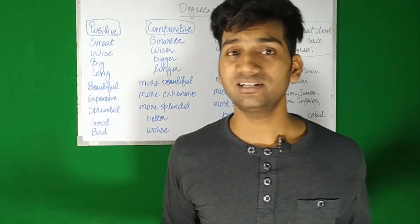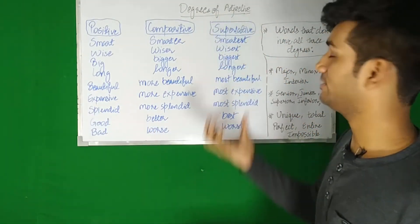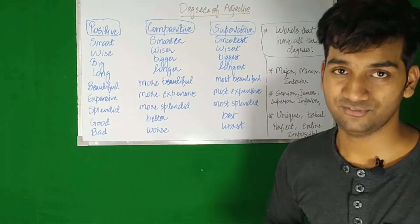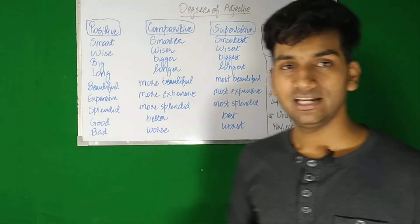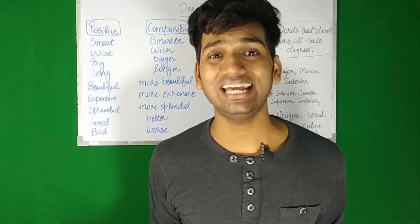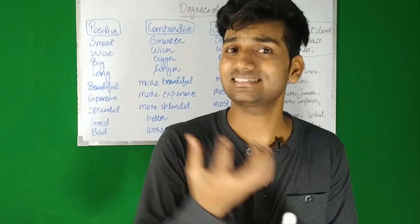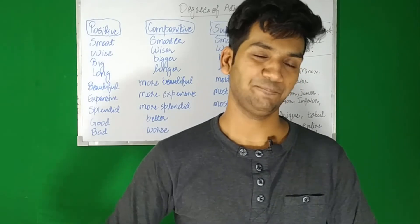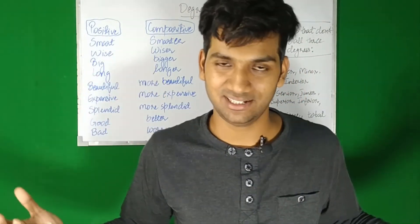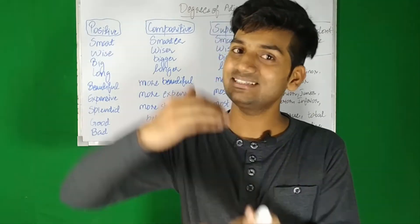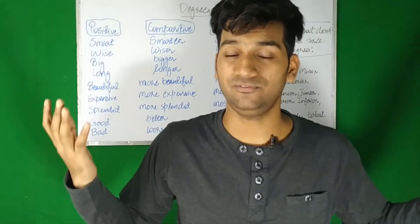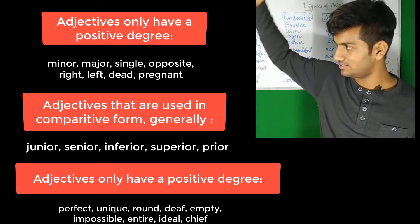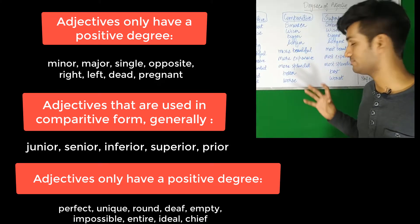There are some words that are used only as a superlative degree - they do not have a positive or comparative form. Some of them are: perfect, unique, total, entire, impossible. If something is unique, can it get any more unique? It already is unique - nothing else is like it. If something is perfect, it has reached the highest level; it cannot get more perfect or less perfect. I'll give you the complete list of such adjectives.